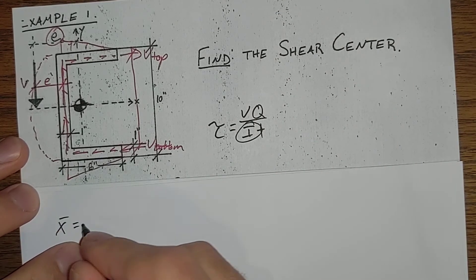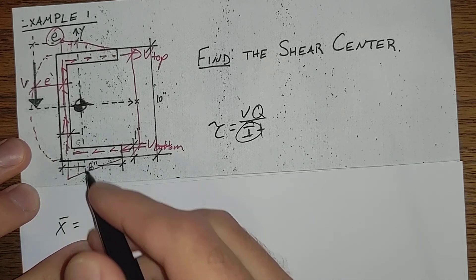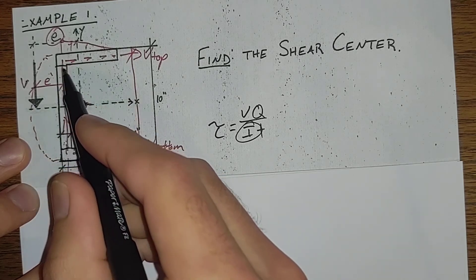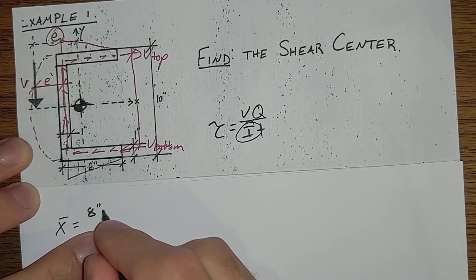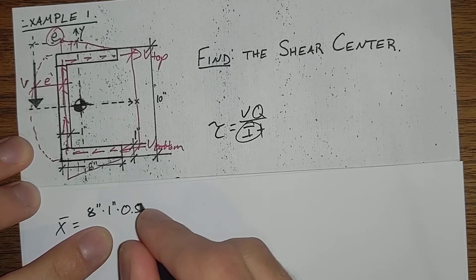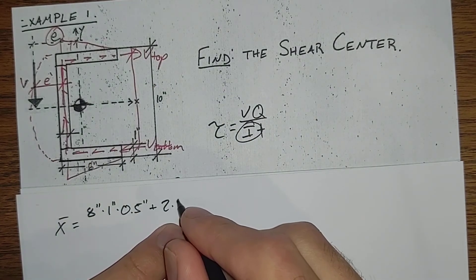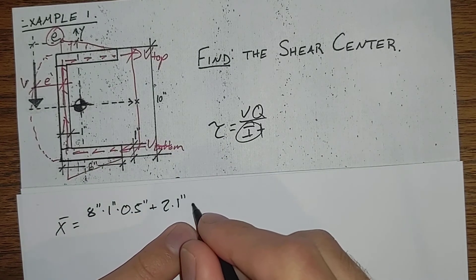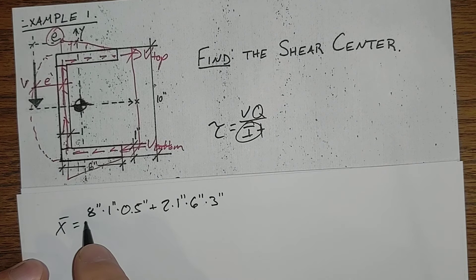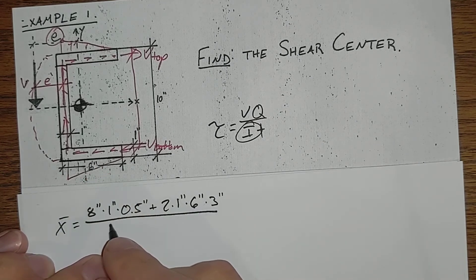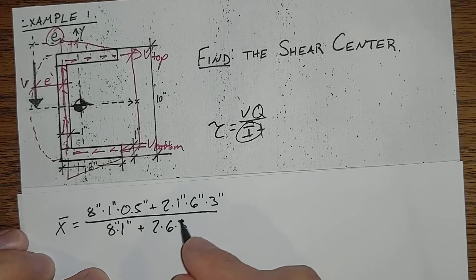This just becomes simply finding a centroid. Now we need X bar equals, we'll use kind of a quasi coordinate system centered on the bottom left here. So X bar is equal to, as we've been looking at these this way, we'll go 8 inches times 1 inch thickness times a half inch up to that centroid plus 2 times, so we've got two of the same, 1 inch, 6 inches in the X direction, times 3 inches to the mid-height of those sections. All divided by 8 times 1 plus 2 times 6 times 1 inch.